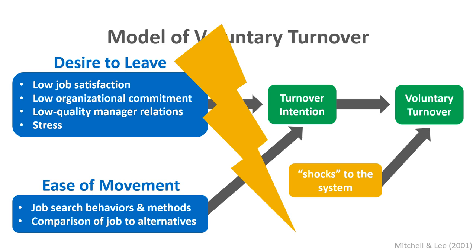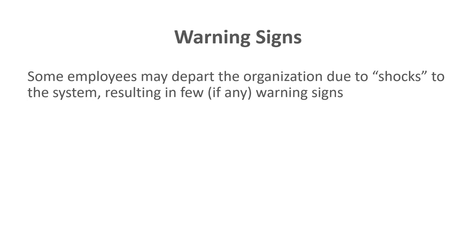From a manager's perspective, it's helpful to think about the warning signs of voluntary turnover. Some employees may depart due to shocks to the system, consistent with the unfolding model, leaving relatively few warning signs. However, in other situations adhering to the classic model, we will see early warning signs we can act on — especially for employees meeting or exceeding performance standards — such as addressing their dissatisfaction, lack of commitment, or higher levels of stress.